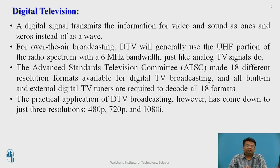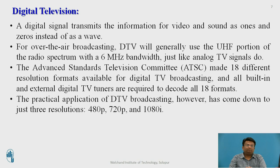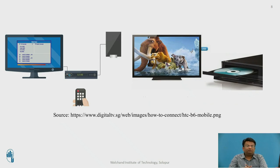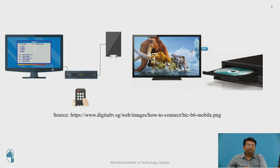The Advanced Television Standards Committee (ATSC) made 18 different resolution formats available for digital broadcasting. Built-in and external DTV tuners are required to decode those 18 different formats. In practice, DTV broadcasting has come down to three resolutions: 480p, 720p, and 1080i. The digital set-top box encodes those 18 digital standard formats for display on a TV. DVD is also a best example of a digital signal.